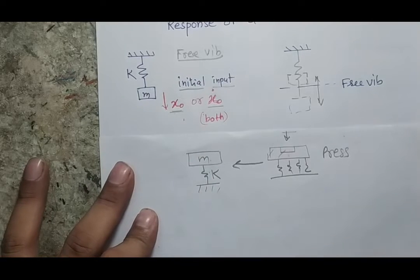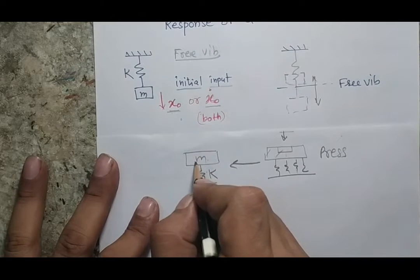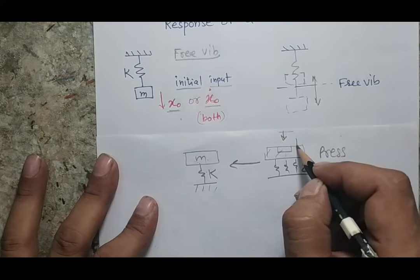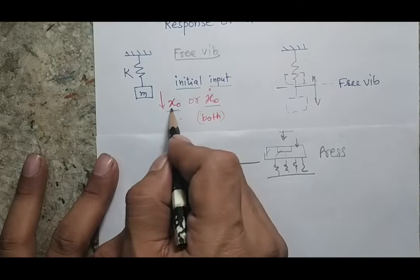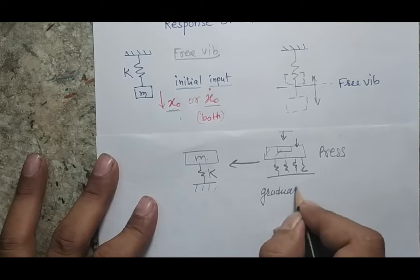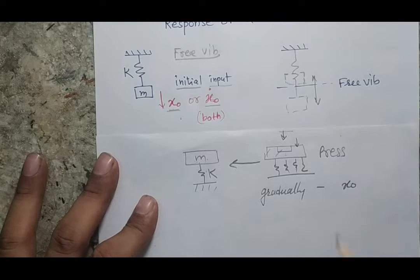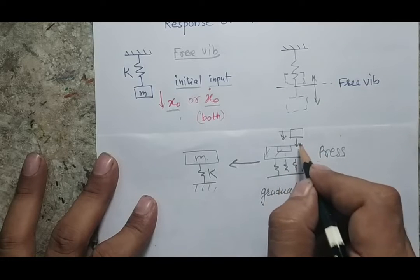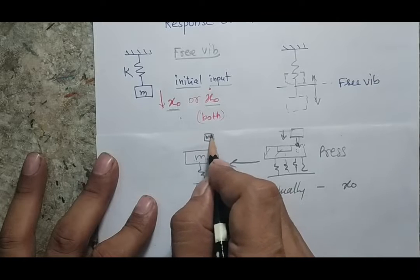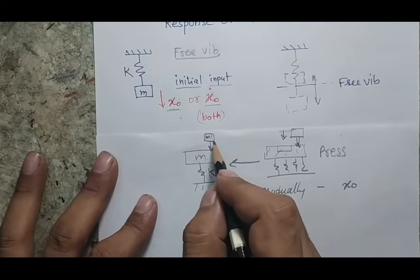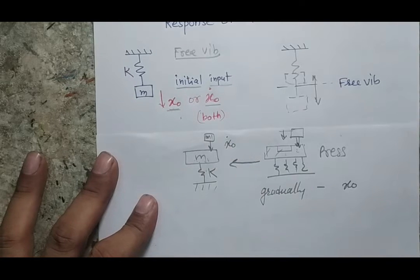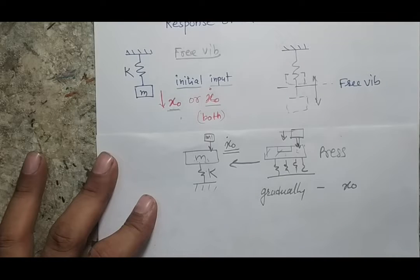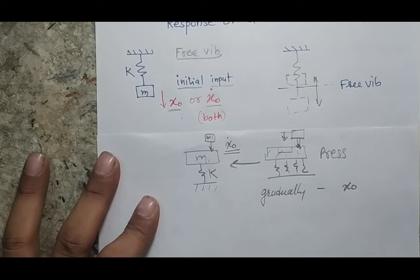In the mathematical model, this is m and this is k. If a gradual force is applied to the system, the system will not experience any velocity and there will only be an initial displacement. However, if a large mass m₁ falls on this body and then loses contact, the mass will experience an initial velocity, which we call ẋ₀. Sometimes both displacement and velocity act simultaneously.